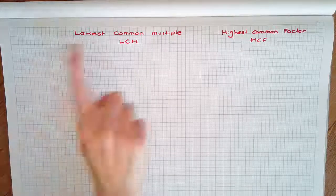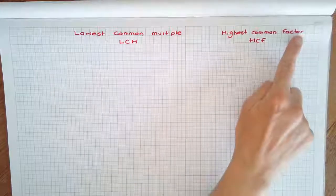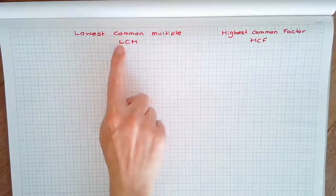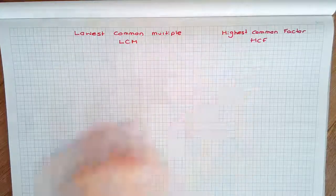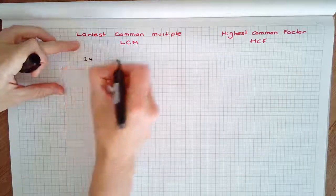In this video we're going to have a look at the lowest common multiple of two numbers and the highest common factor of two numbers. They're often abbreviated LCM and HCF. The two numbers we're going to consider are 24 and 36.